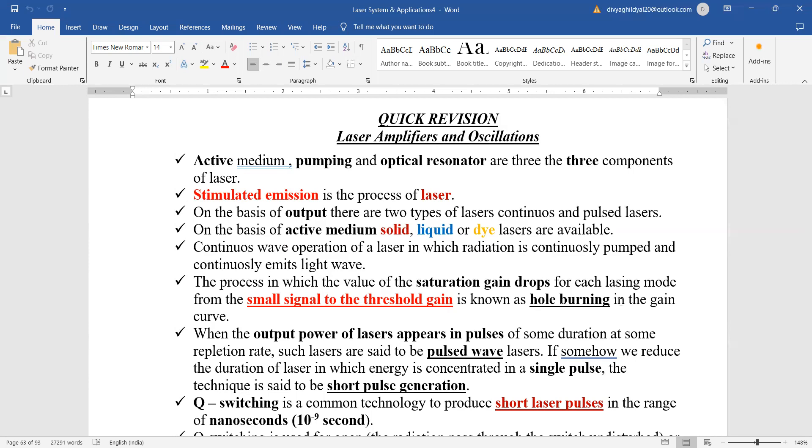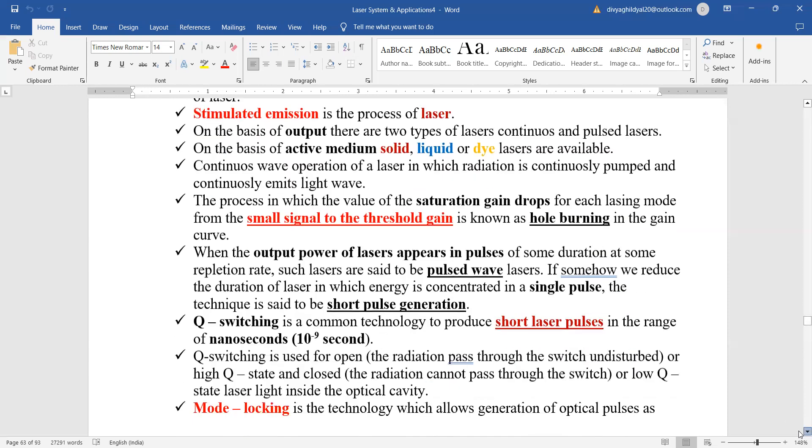When the output power of laser is appearing in the form of pulses, it is said to be a pulsed wave laser. If we somehow reduce the duration of laser in which energy is concentrated in the single pulse, it will be a very short pulse generation.